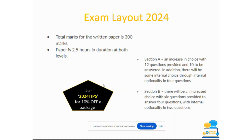We're going to start and have a look at the exam layout for this year. Similar to last year, the total marks for this written paper is going to be 300 marks. You've 100 marks already covered by handing off your project. The paper is going to be 2.5 hours in length at both higher and ordinary level, the same for the 300 marks.